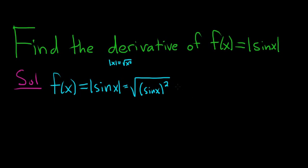So we can write this as the square root of sine x quantity squared. The next thing we'll do is write this as sine x squared to the 1 half. Remember the square root can be written to the 1 half power.